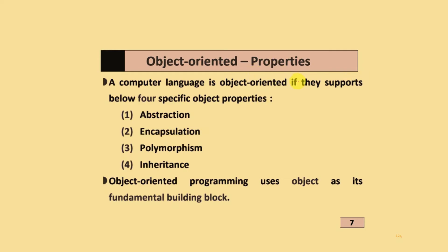A computer language is object-oriented if it supports the below four specific properties: abstraction, encapsulation, polymorphism, and inheritance.